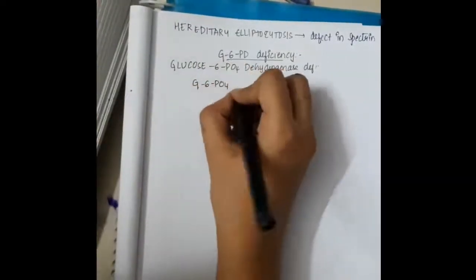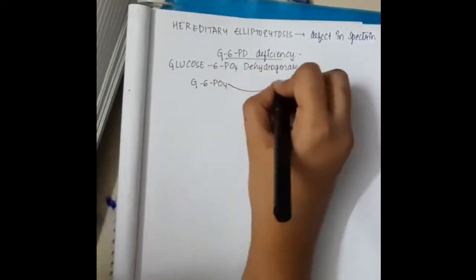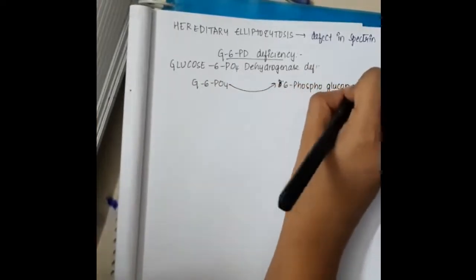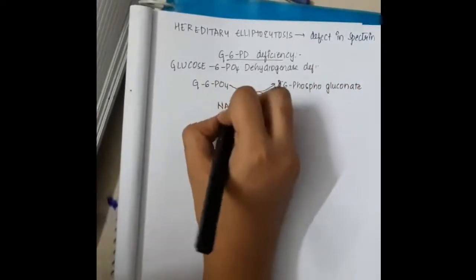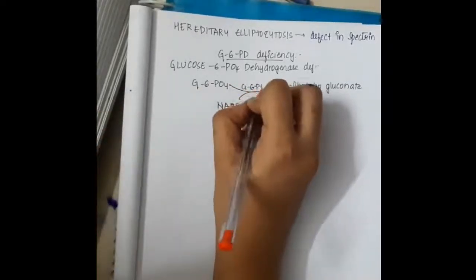Normally, Glucose 6 Phosphate in the presence of Glucose 6 Phosphate Dehydrogenase forms 6 Phosphogluconolactone. During this process, NADP gets converted to NADPH.